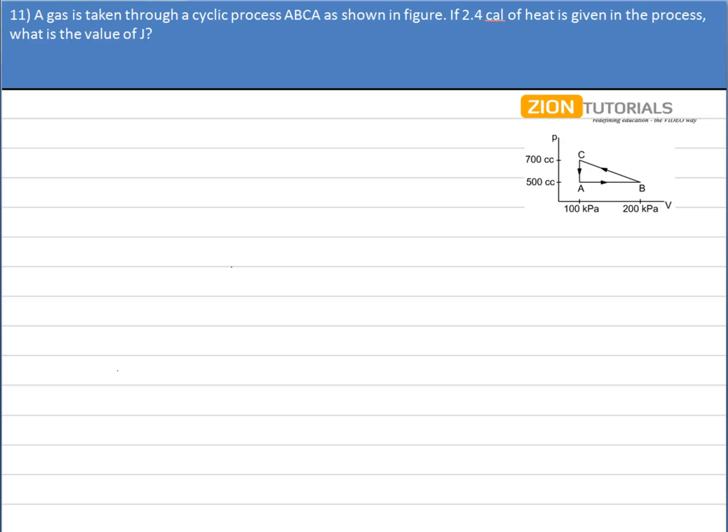A gas is taken through a cyclic process ABCA as shown in figure. If 2.4 joules calories of heat is given in the process, what is the value of J? First of all, since it is a cyclic process, the change in internal energy will be zero.